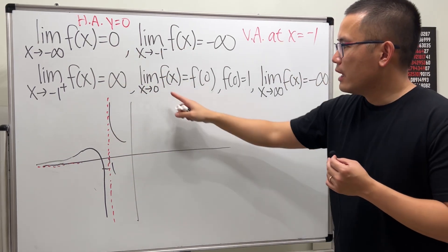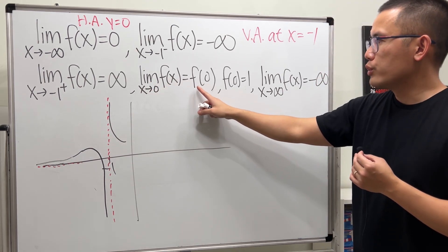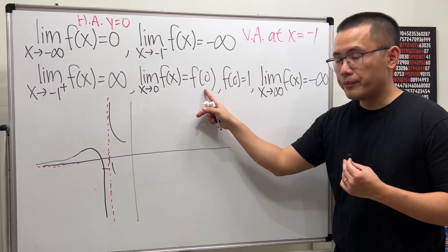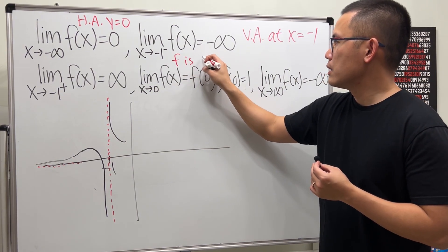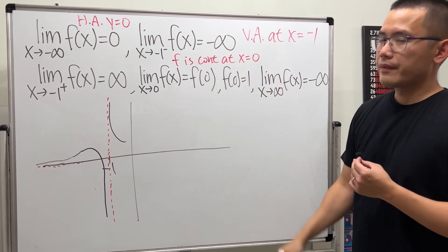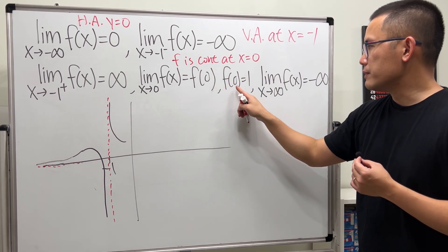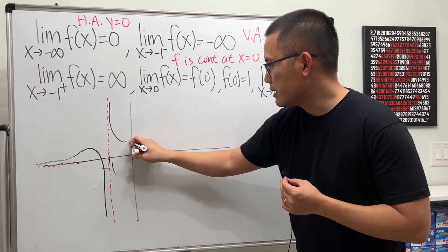Now, the limit as x approaching 0 of the function is equal to the value of the function at 0. This means f is continuous at 0. And we also know that f of 0 is equal to 1. So here's, of course, 0. And let's say here is 1.